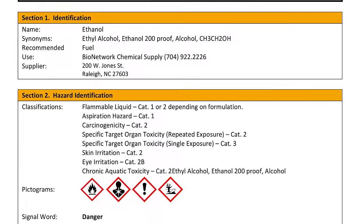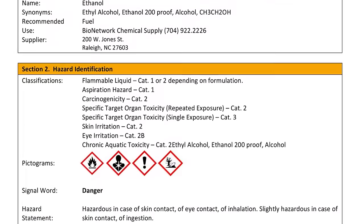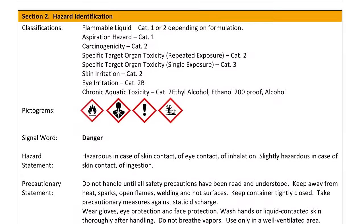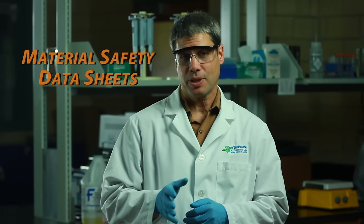Every chemical in the lab is required to have a technical document called a safety data sheet or SDS, usually provided by the manufacturer. These were formerly known as material safety data sheets or MSDS.